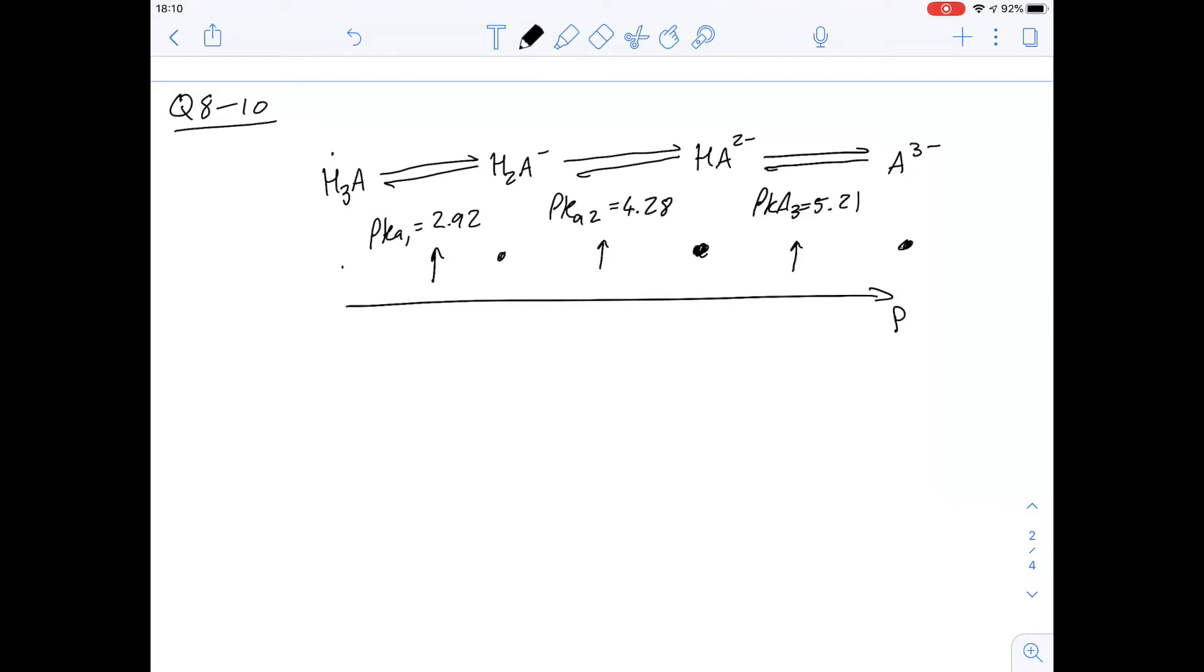So basically gives us a pH scale here and the different points at which the different species become dominant. So beyond 5.2 this will be the dominant species, beyond 4.2 up to that point you can see that HA²⁻ would be the dominant species.